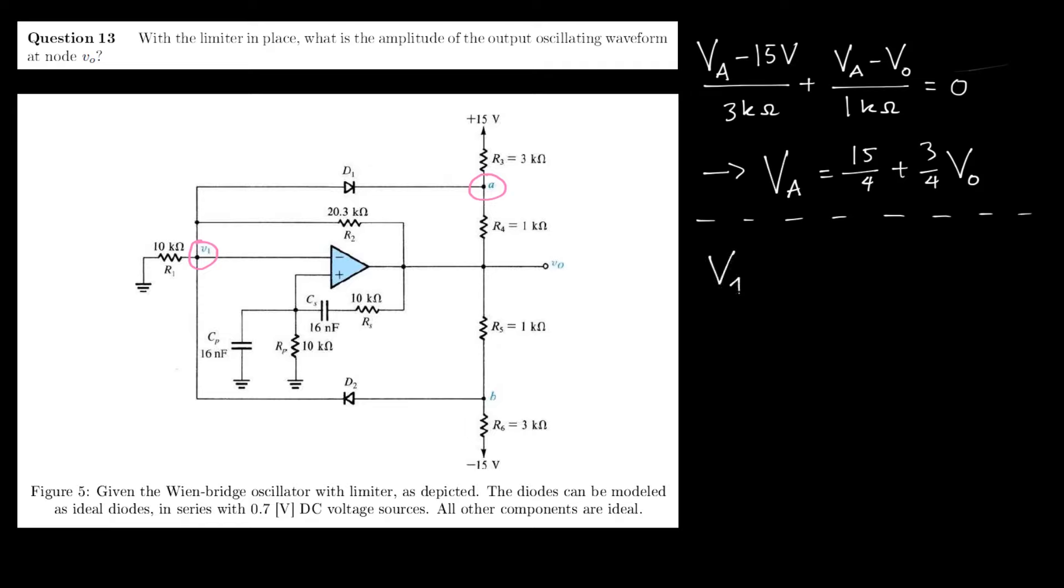So V1 is just R1 over R1 plus R2. Again, we assume that the diode is turned off here.